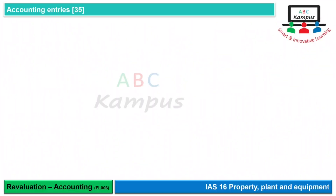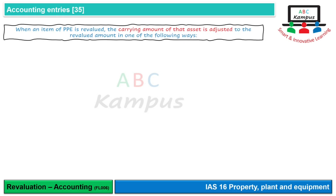Welcome to BBC Campus. आज हम IAS 16 Property Plant and Equipment में Revaluation की Accounting को focus करेंगे। Accounting entries दो तरह की हो सकती हैं। जब asset की revaluation होती है तो या तो उसकी amount increase होती है या decrease होती है, तो carrying amount asset की adjust होती है। दोनों ways से जो ultimate impact है gain और loss का और asset की ultimate amount का, वो same होता है।